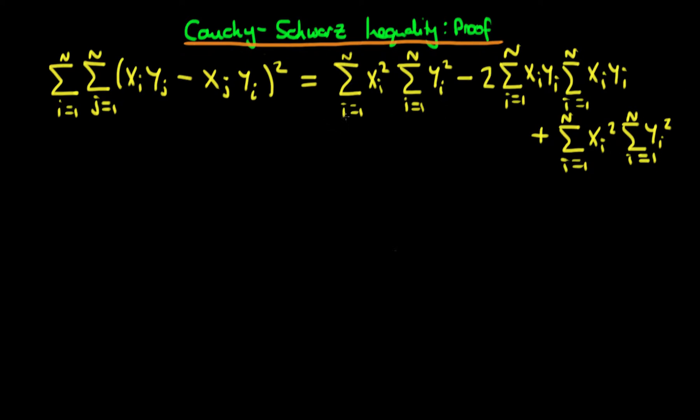But it's only a mess until you notice that the first term and the last term are exactly the same. So we can rewrite the right-hand side as being equal to twice the sum from i equals 1 to n of xi squared times the sum from i equals 1 to n of yi squared.